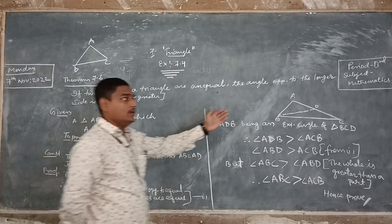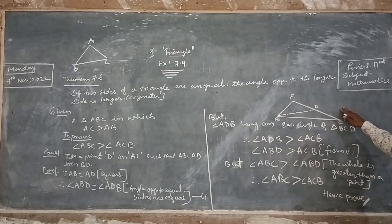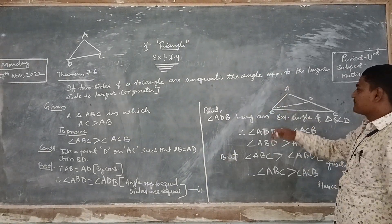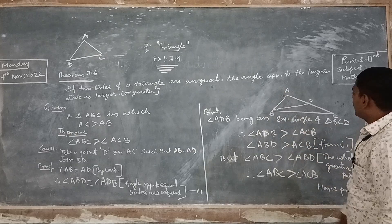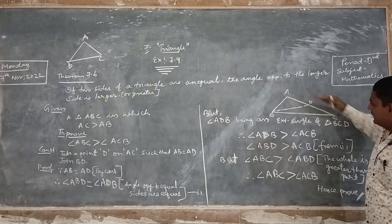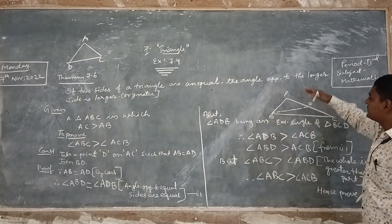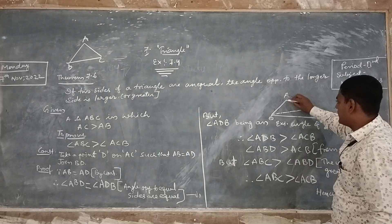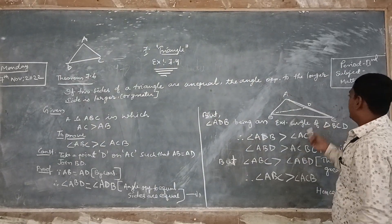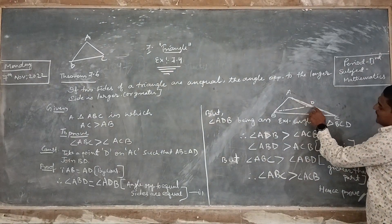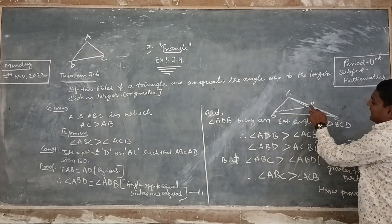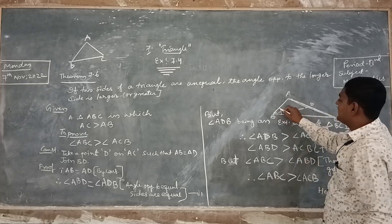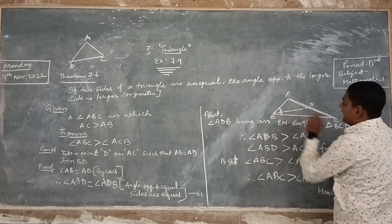Let us understand through the geometrical figure. In triangle ABC, side AB is smaller than side AC. AC is the longer side of this triangle. The angle opposite to the larger side is angle B. So here, angle B will be the greater angle.